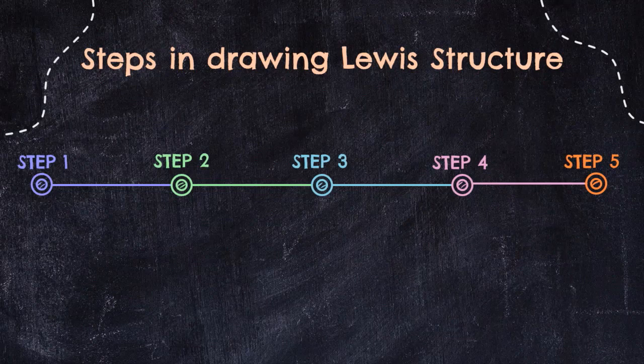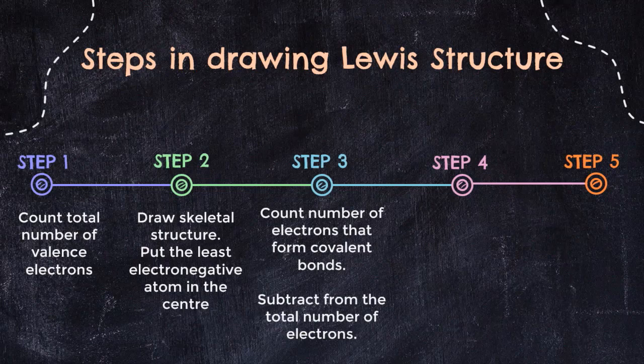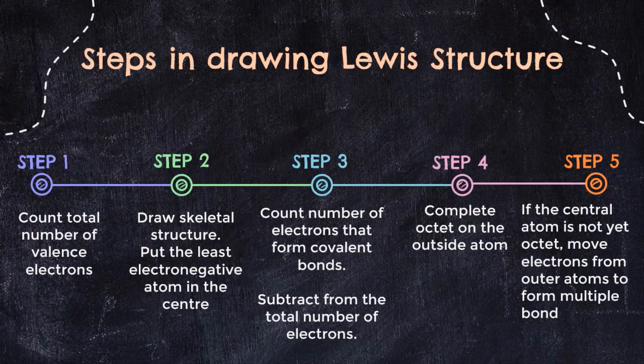These are the five main steps you need to know when drawing Lewis structures involving covalent compounds. First, you need to count all the valence electrons present in your molecule. Then, draw the skeletal structure by first assigning the central atom, followed by subtracting the number of bonding electrons from total electrons, then distribute the remaining electrons to the terminal atoms, and lastly, form a multiple bond if the central atom has not yet achieved octet.